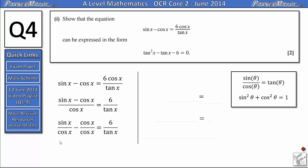Now we're in a position to use one of the identities because here we've got sin x/cos x so we can replace that with tan x. And here we've got cos x divided by cos x which just gives us 1 so we get tan x - 1. On the right hand side we've still got 6/(tan x).